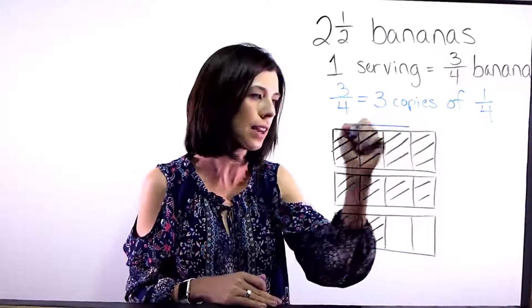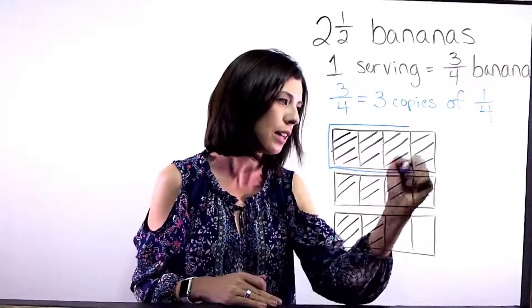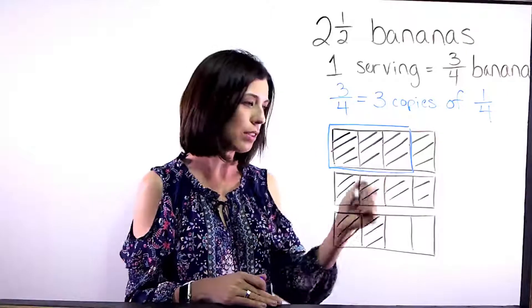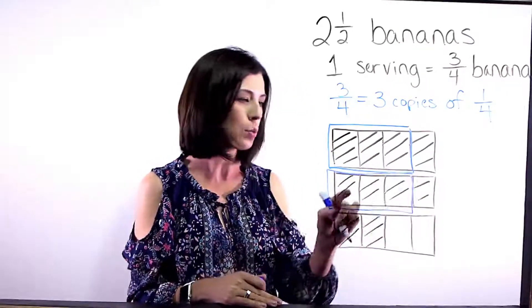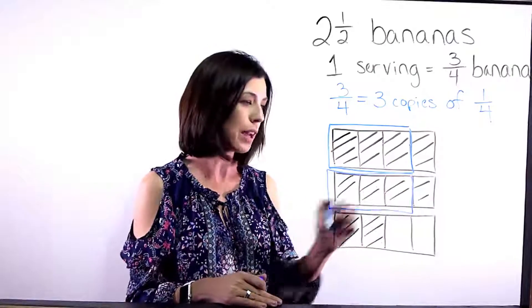So let's go ahead and circle one serving with what we have. So right here I can see that I'm going to have a serving here. There's one, two, three copies of a fourth. I know I'm going to have a serving right here. Again, there's one, two, three copies of a fourth as well.